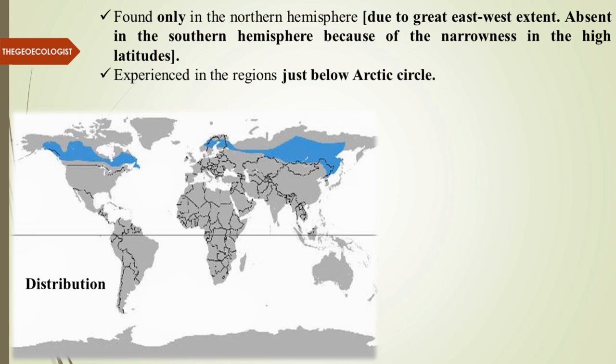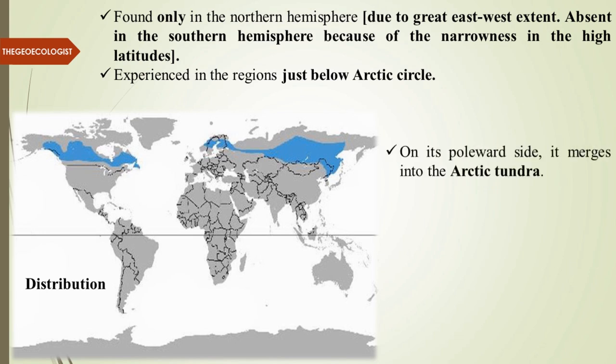The Taiga biome is experienced in regions just below the Arctic Circle. On its poleward side, it merges into the Arctic tundra. In many places, especially in the Siberian area, there is a merger of these two biomes. Many people confuse whether to call the Siberian forest part of the Taiga or tundra, so understanding the characteristics will help classify each biome.